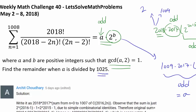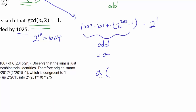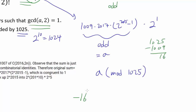We need to find the remainder when A is divided by 1025. Note that 2 to the 10th power is 1024, so 1025 is one more than 2 to the 10th. We want A mod 1025. First, 1009 equals negative 16 mod 1025, since 1025 minus 1009 equals 16. And since 1025 times 2 is 2050, we get 2017 equals negative 33 mod 1025. Now for 2 to the 2015 minus 1: